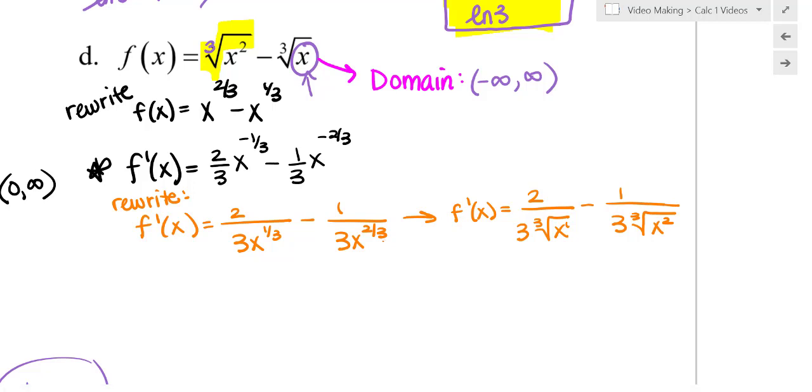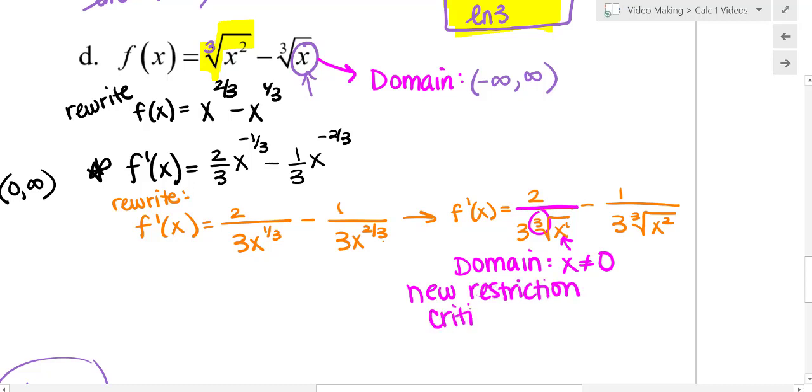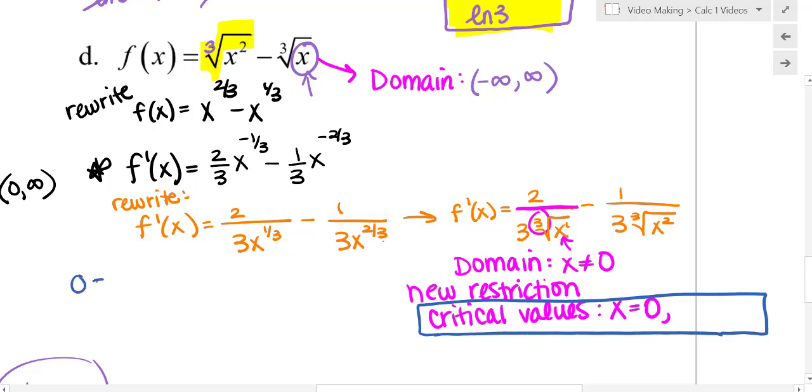Now if I look at this, I can identify my new domain of my derivative. I have still an odd root, so that doesn't necessarily restrict what x can be—x can be positives, negatives, or zero. However, that is in my denominator. So now x cannot be zero, or I have a new restriction. So when I'm listing out my critical values or critical numbers, I want to make sure I include x equals zero. Again, I'm not getting zero when I solve, but it will be an answer. It is one of my critical values because it's a new restriction to that domain.